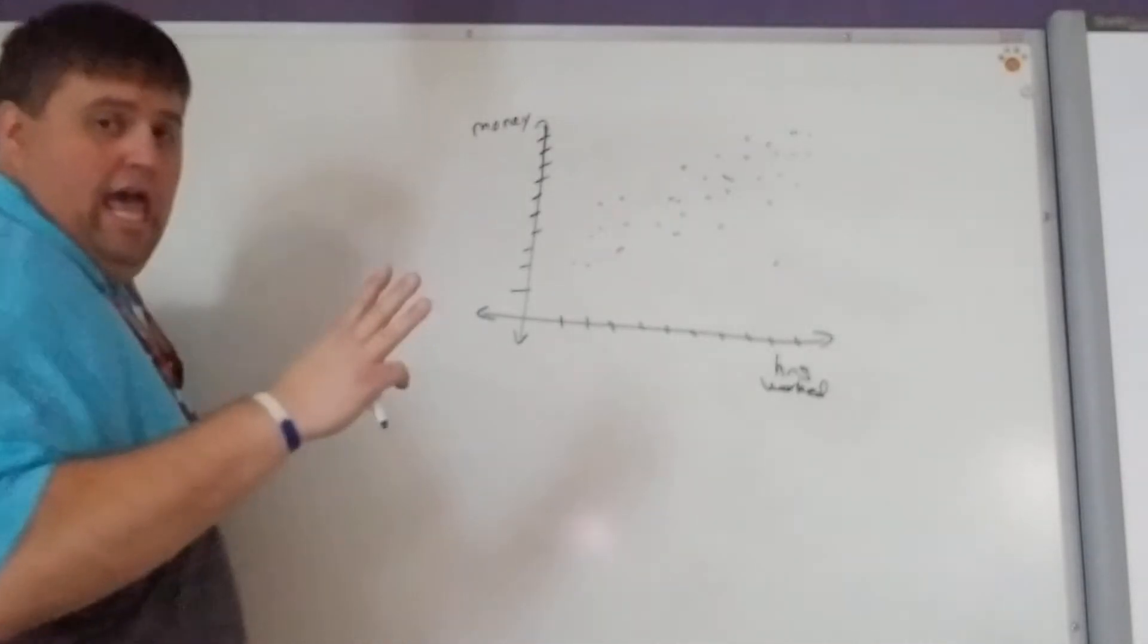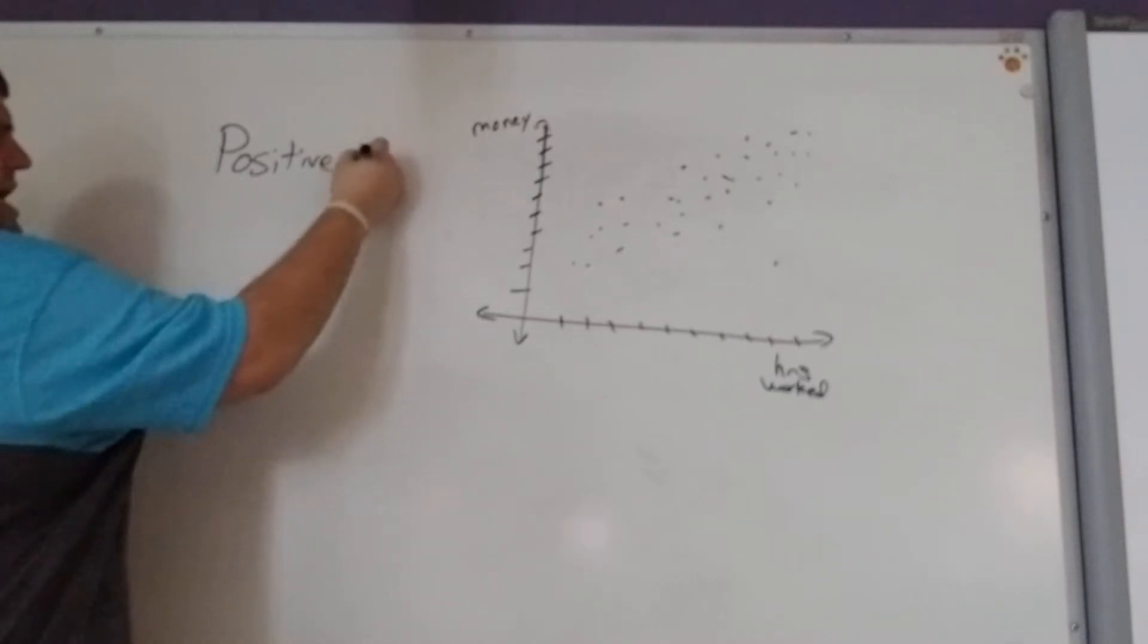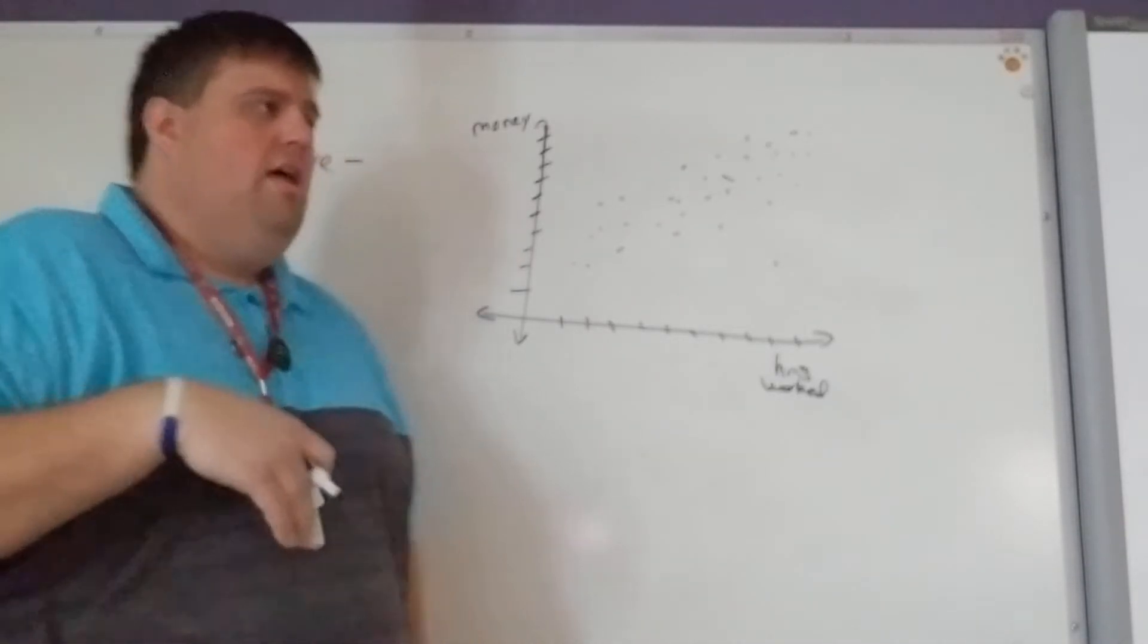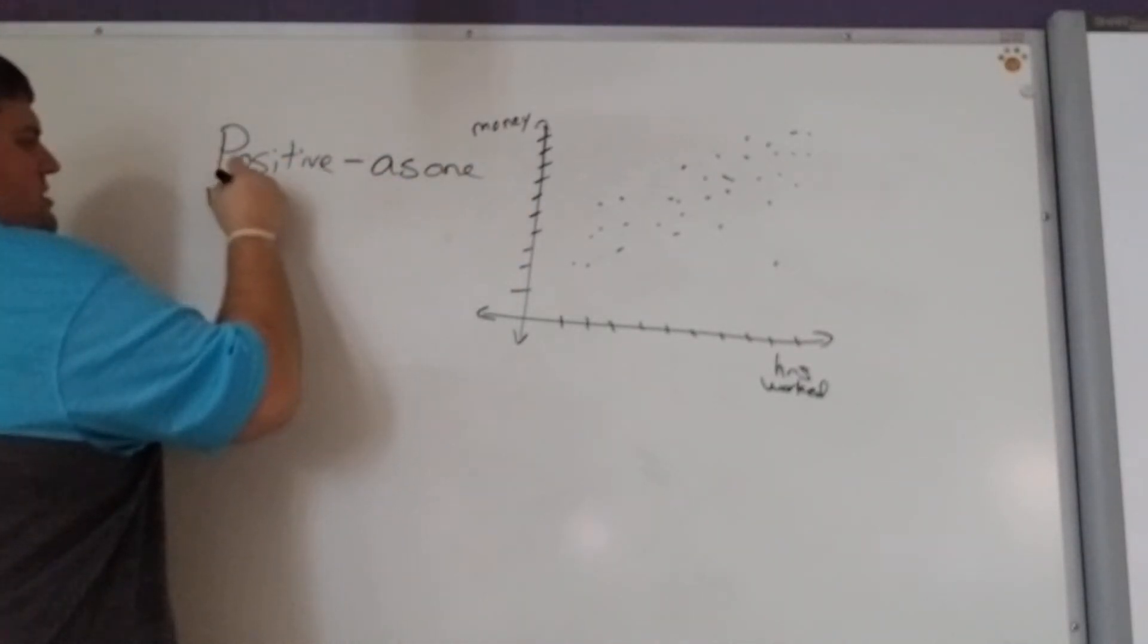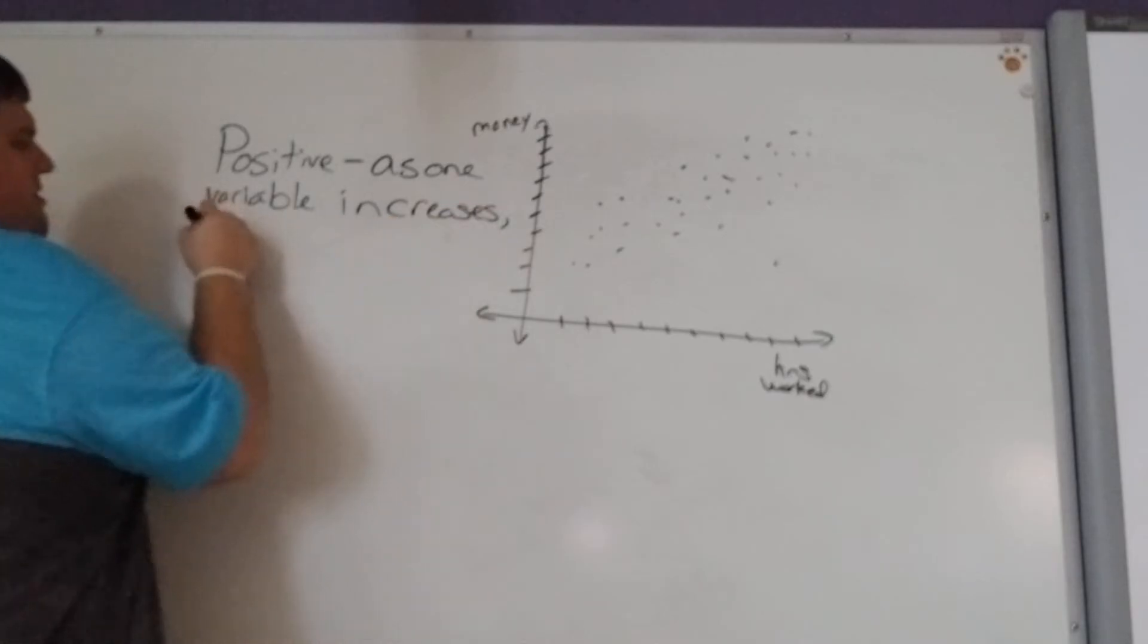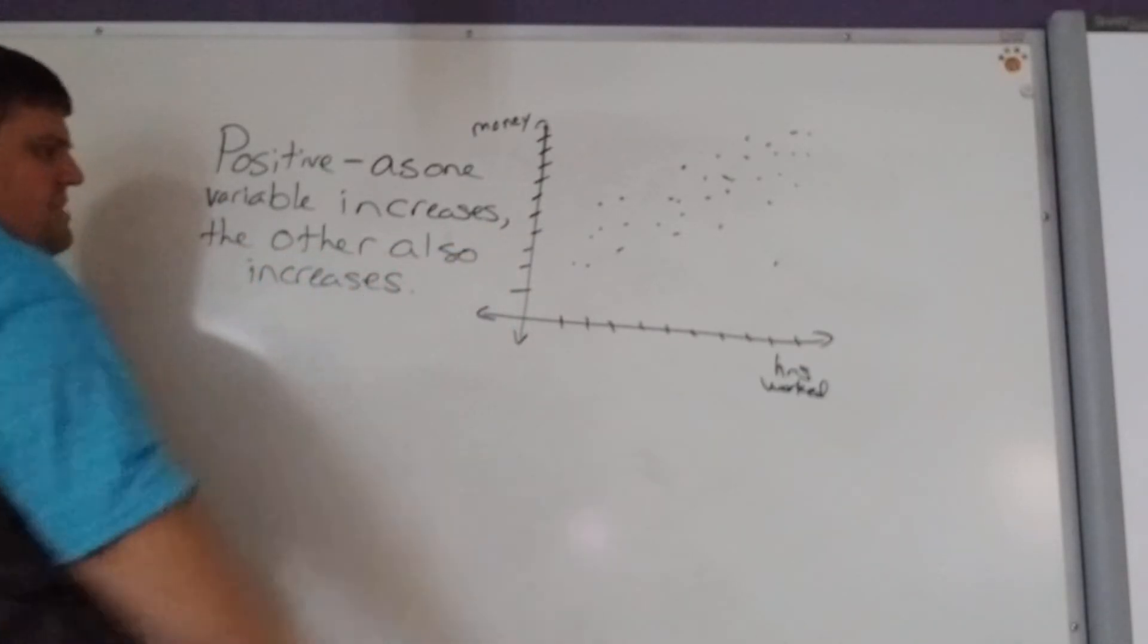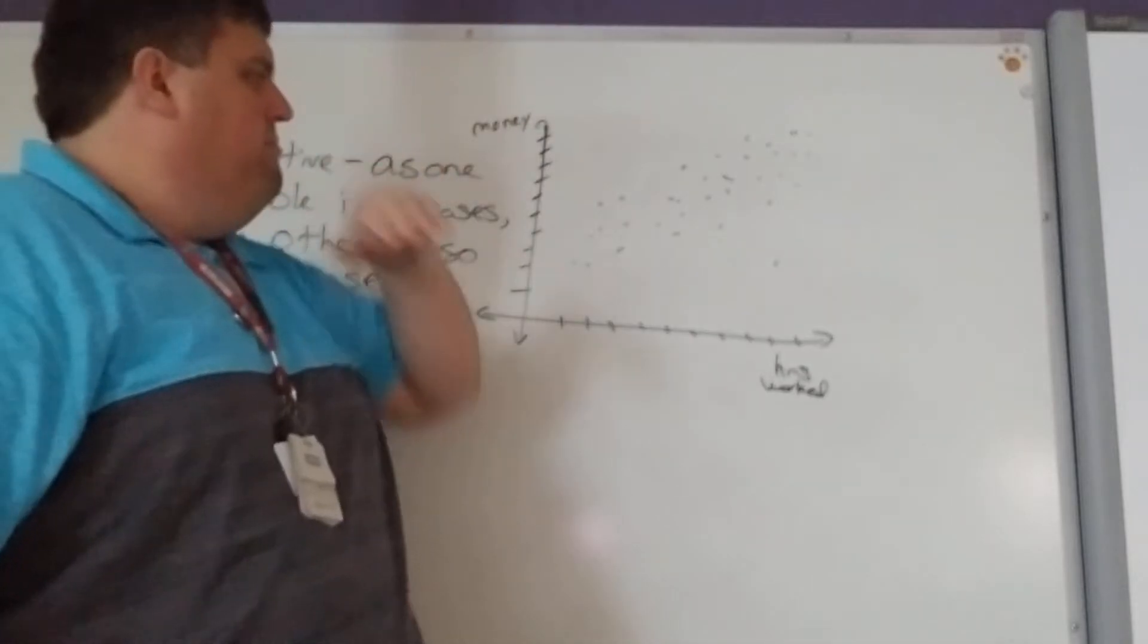We can have a positive relationship. Positive relationship, or you might hear the word positive correlation. I might say that, or positive relationship. A positive correlation means as one variable increases, the other also increases. So as you look at this scatter plot that I made, as you work more hours, typically you're going to get more money.